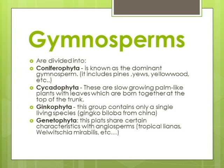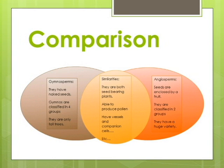Gymnosperms are divided into: Coniferophyta, known as the dominant gymnosperm. Cycadophyta — these are slow-growing, palm-like plants with leaves which are born together at the top of the trunk. Ginkophyta — this group contains only a single living species. Gnetophyta — these plants share certain characteristics with angiosperms.